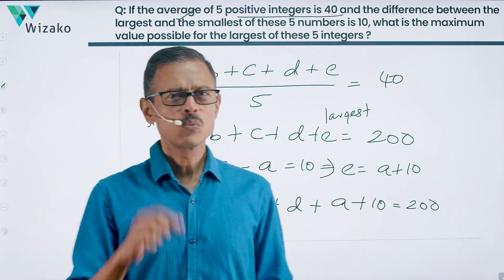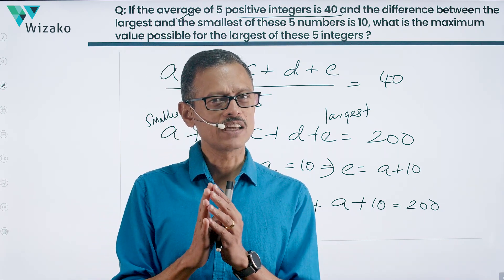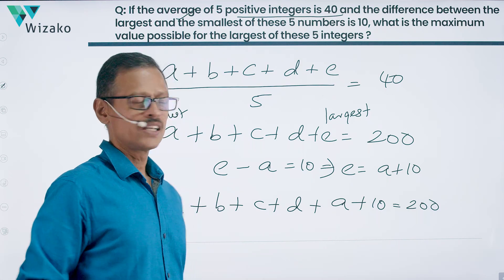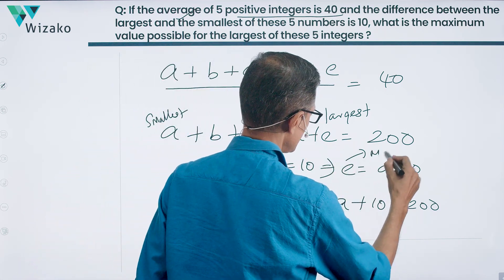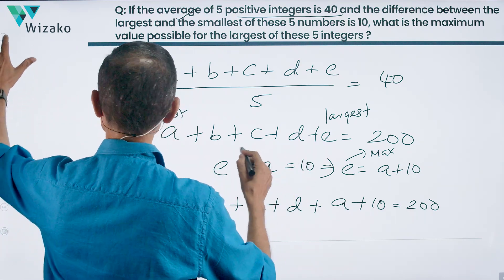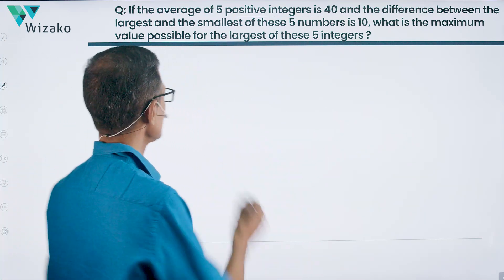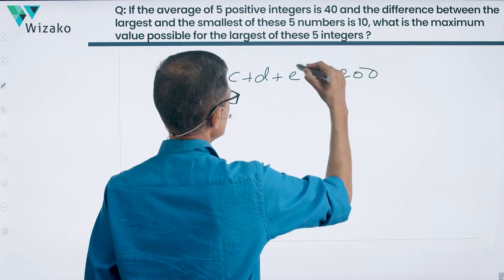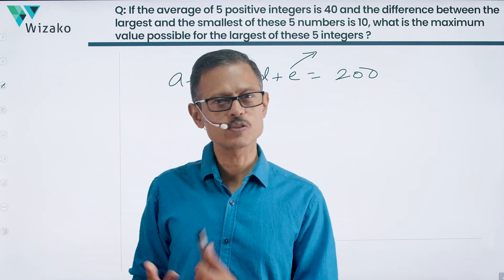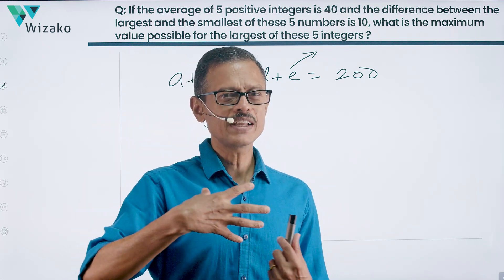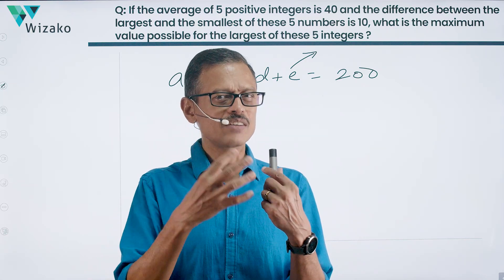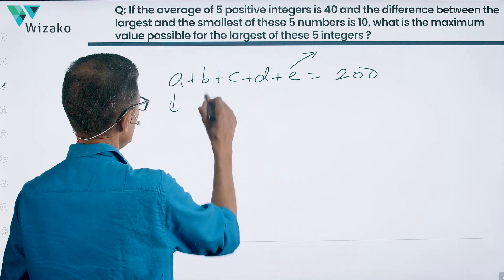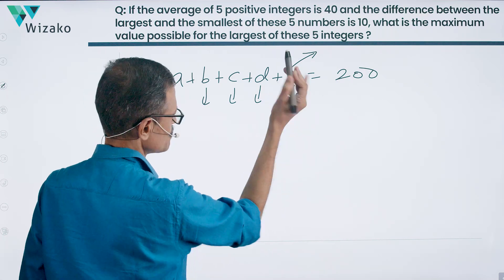We need to maximize E. Since the sum is fixed at 200, to maximize E we should minimize the other numbers. If nothing else had been mentioned and these are just five positive integers, we'd want to give the least possible values to A, B, C, D — making them 1, 2, 3, 4. But wait — why should these numbers be different?